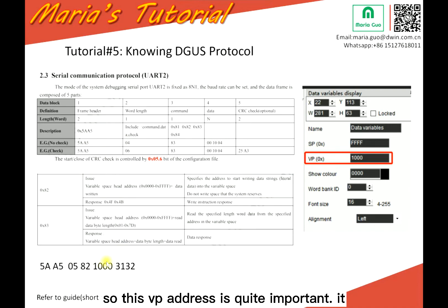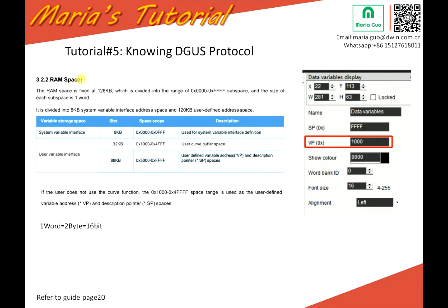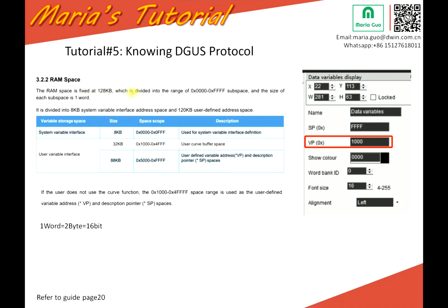So this VP address is quite important. It can be defined by yourself, and this is the scope. Here, this is the RAM space. The RAM space is fixed at 128 KB, which is divided into the range of subspaces.